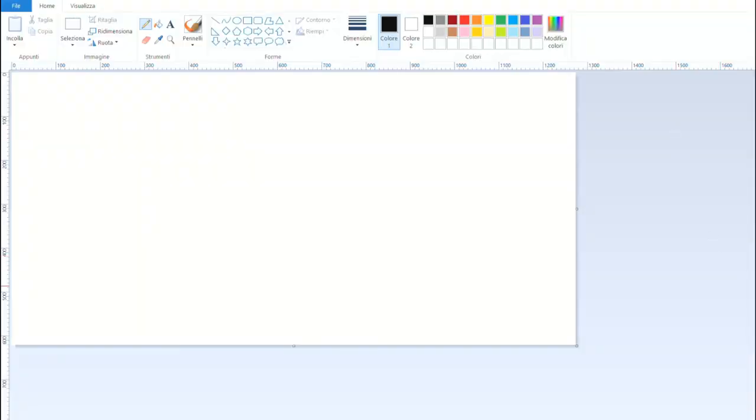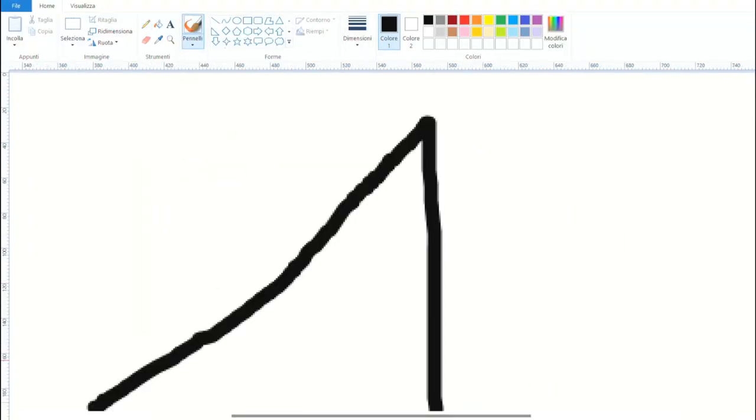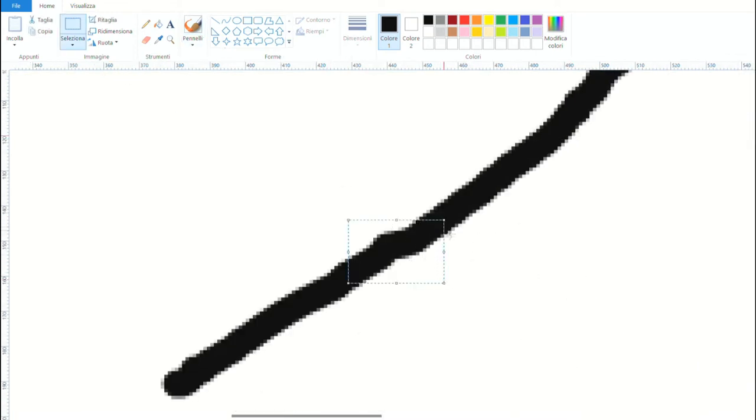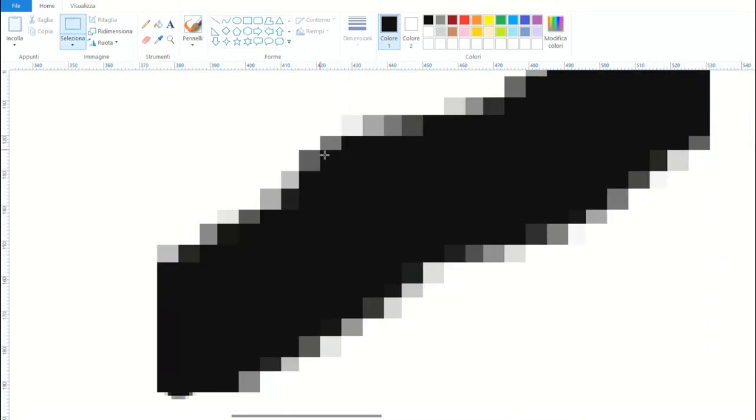If you want to teach your computer to read numbers, the input must represent somehow an image of a number. But how can you transform an image into a bunch of numbers? Try this. Open paint on your computer, draw whatever number you want, and zoom in as much as you can. You'll probably end up seeing a bunch of color squares like this. When you're drawing on your computer, what you're really doing is selecting the color of these squares, called pixels of the image.